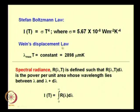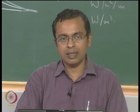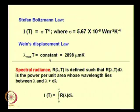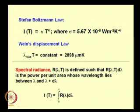Then there is Wien's displacement law, which captures the information that as the temperature changes, the wavelength corresponding to the maximum of the spectrum also changes. That equation works out to lambda_max × T equals a constant — the product of the temperature and the wavelength that gives maximum spectral radiance is a constant. Therefore, as temperature goes up, lambda_max has to come down — these two are inversely related.